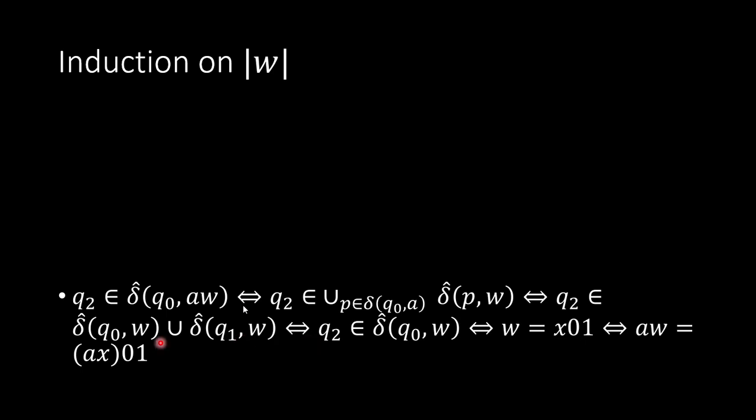So in the end, we have just δ̂(q0, w) left, so we have q2 must be in δ̂(q0, w). So if q2 is in δ̂(q0, w), and based on the hypothesis, we have immediately w must be the form x01. If w is x01 form, then aw, which is the one we have, also ended by 01. And that concludes the proof.